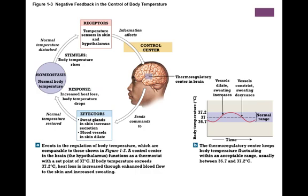One example of negative feedback in the body is the control of body temperature. Normal body temperature is when the body's at homeostasis. If the temperature rises, there are receptors in the skin and in the hypothalamus that detect that change, and they send the information to the control center, which is the brain. The brain then sends a command to the effectors — in this case, sweat glands and blood vessels — which cause the temperature to decrease and return to normal body temperature.